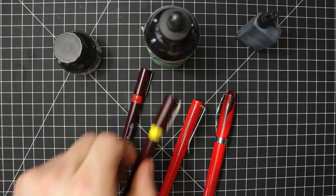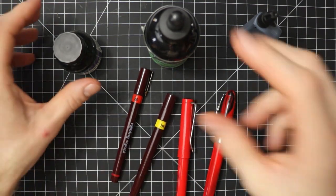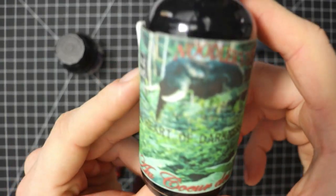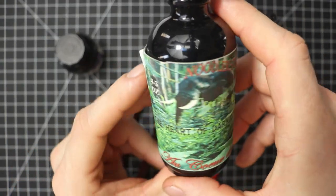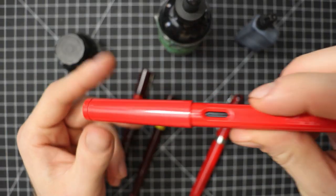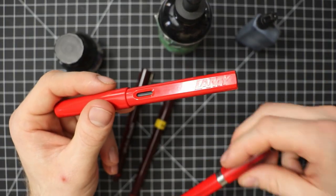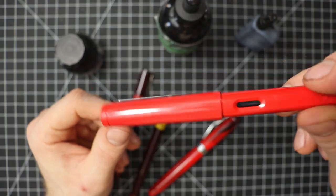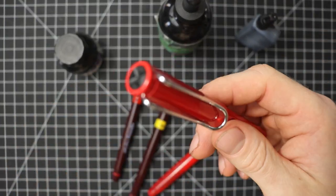And this here is the Noodler's Heart of Darkness. This is the ink that I use for this Lamy Safari. I also use it for my Noodler's Ahab but I prefer using it in my Lamy Safari because this one has a finer nib on it.